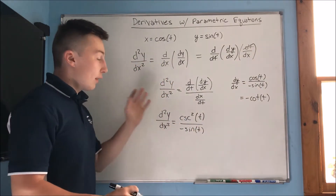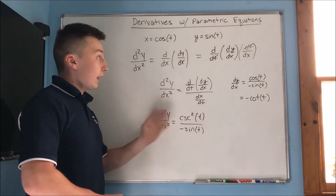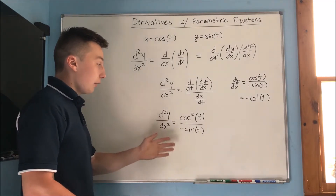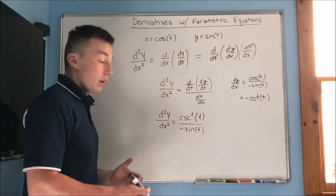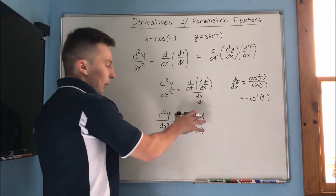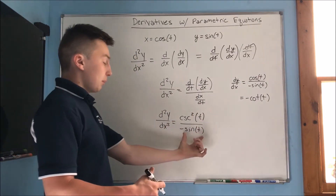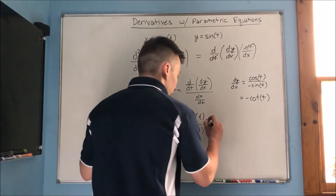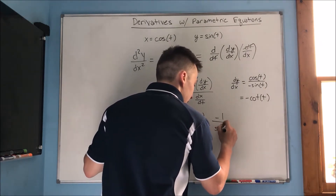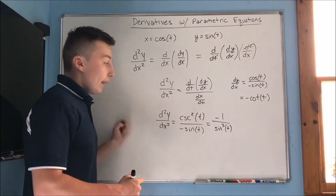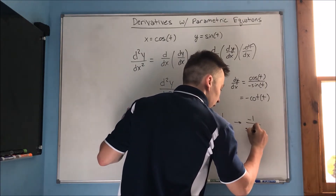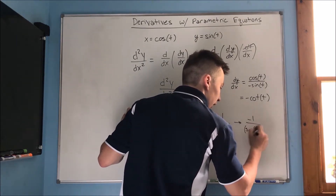To find the concavity at t = π/4, we plug in π/4. We can rewrite the second derivative by combining csc²(t) and negative sin(t) in the denominator as negative 1 over sin³(t). Plugging in π/4, sin(π/4) = √2/2, so we get negative 1 over (√2/2)³.